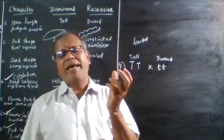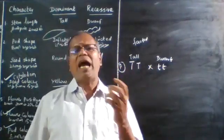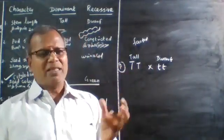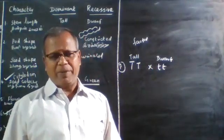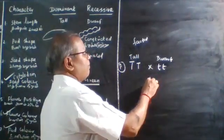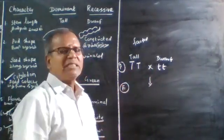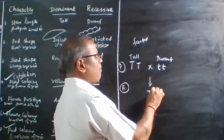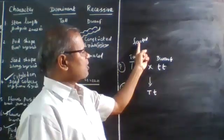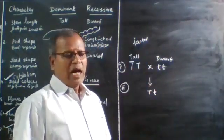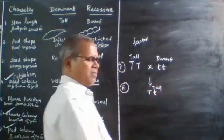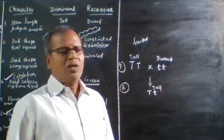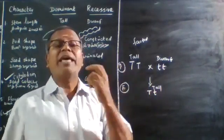A homozygous organism has two similar or identical factors. When a homozygous tall plant is crossed with a homozygous dwarf plant, the F1 generation produces all heterozygous tall plants.